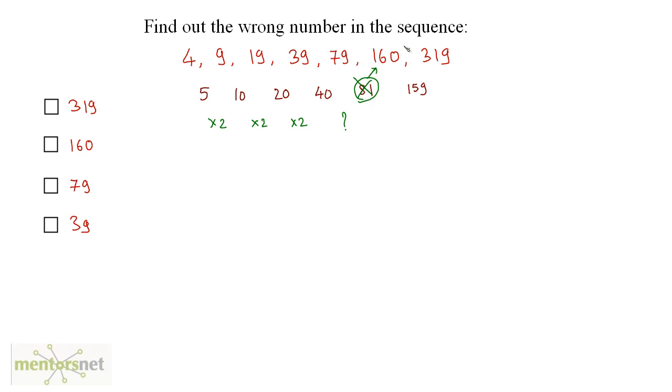So we are deriving 160 from 81. So 160 is the wrong number in the sequence. So option B is the appropriate choice for us.